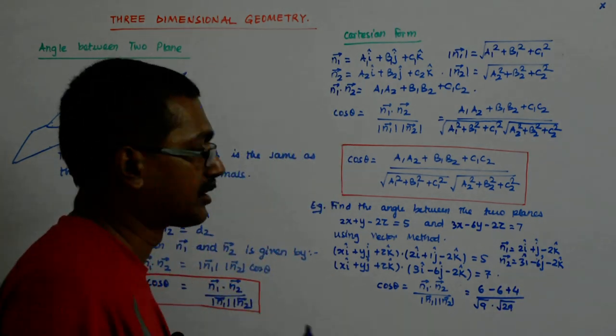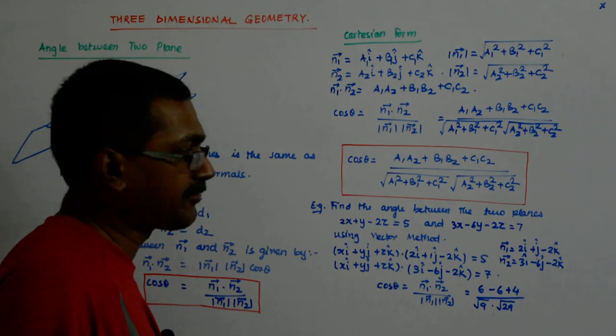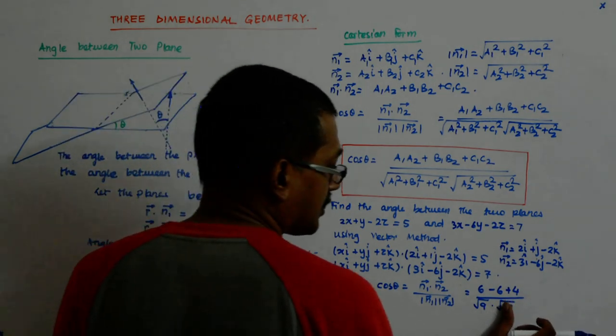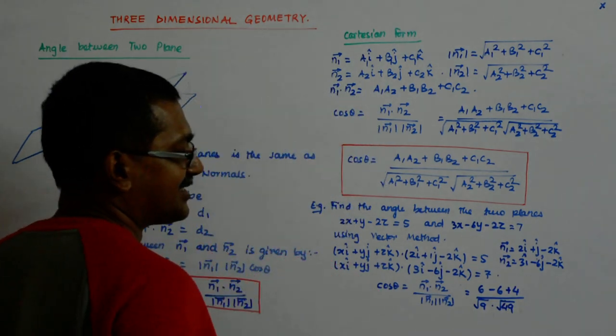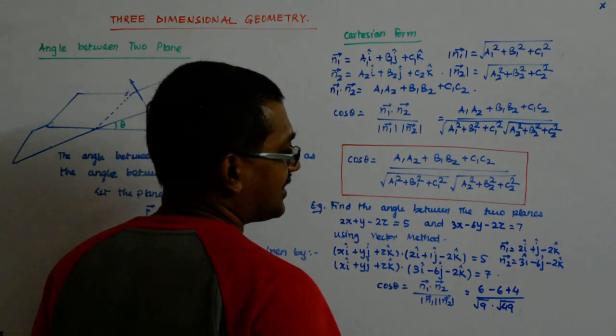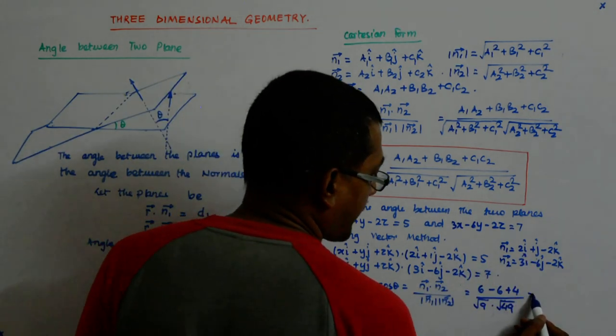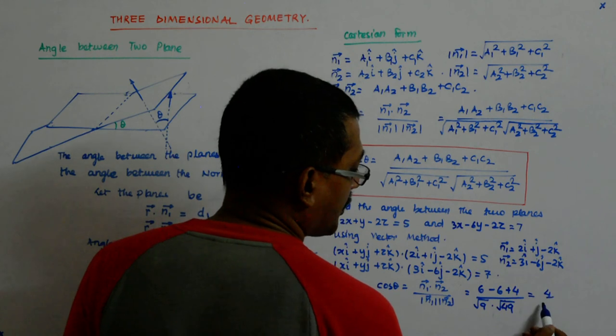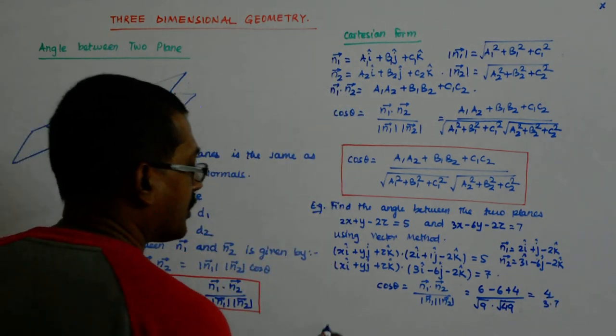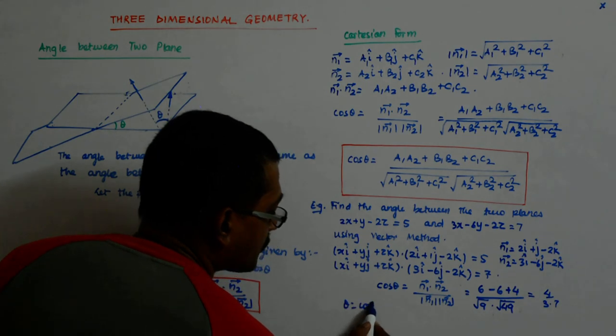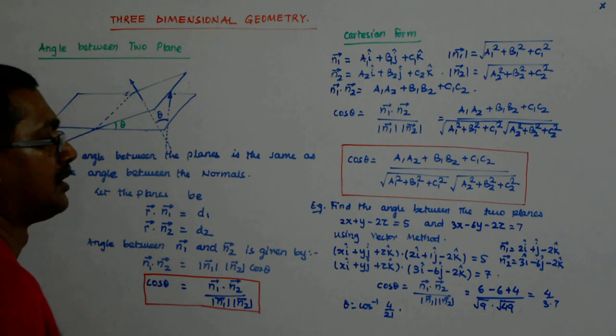Oh, I am extremely sorry. 9 and 36 is 45 and 4 is 49. I thought it is 4. So that is 4 upon 3 into 7, 4 upon 21. So theta is equal to cos inverse 4 upon 21.